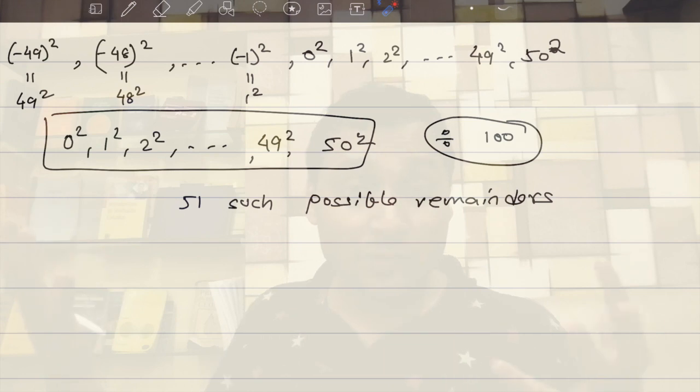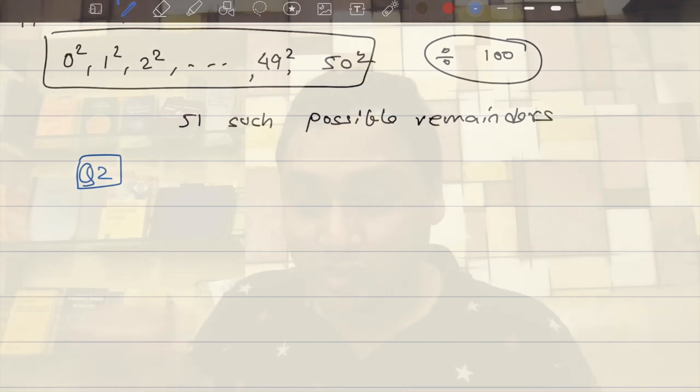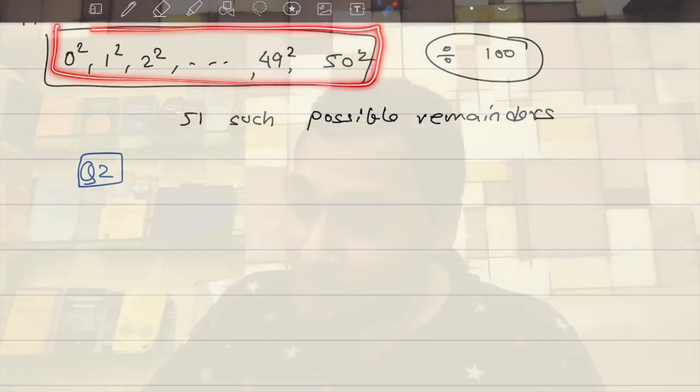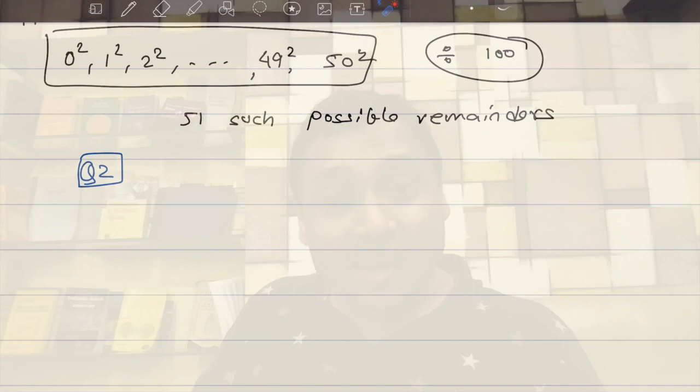That is, remainder-wise, they would be the same when divided by 100. That's the second question for the Ramanujan gift card. Question number 2 for the Ramanujan gift card. Why two of these numbers would give the same remainder when divided by 100?